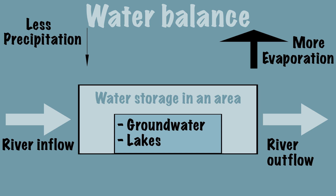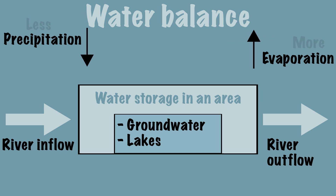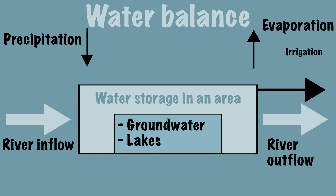Humans also influence the water balance. By using a lot of water, less water is available for nature. For example, a lot of water is used for irrigation of agricultural areas, by industry, and by households. By using a lot of water, it is possible that the water balance is not in balance and a shortage arises.